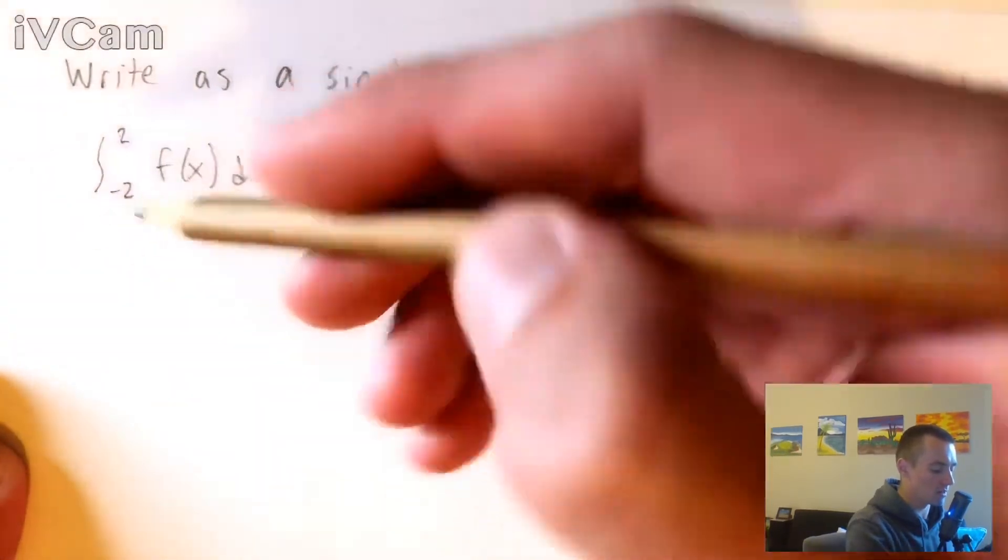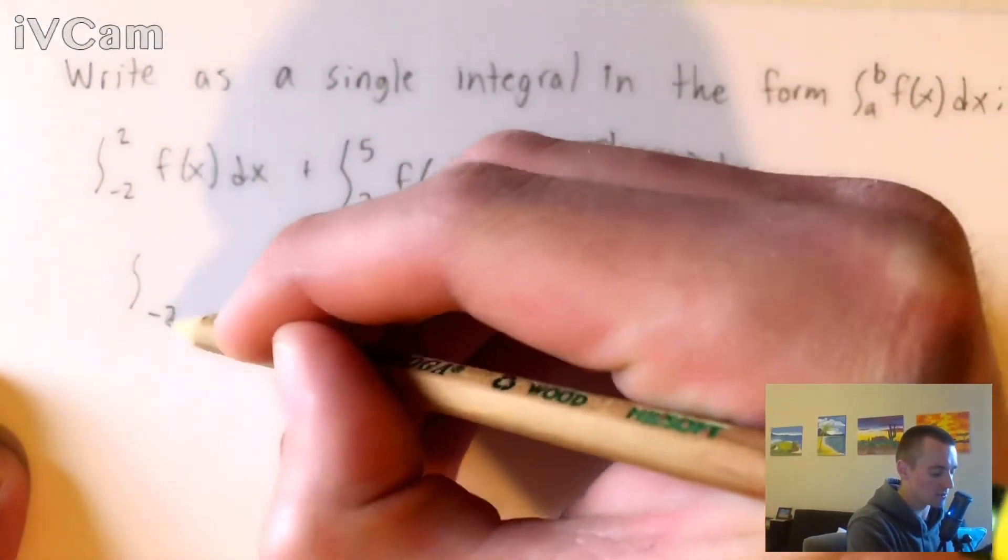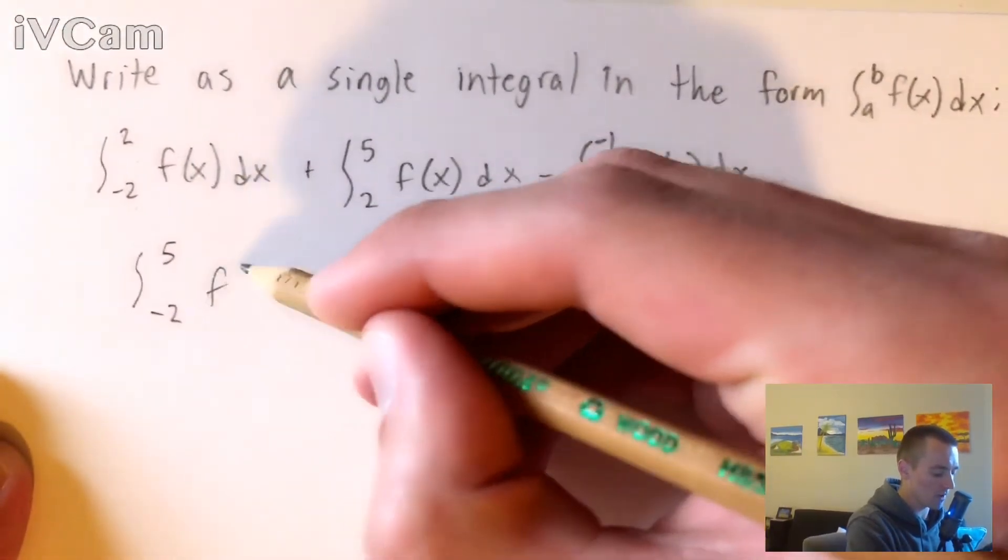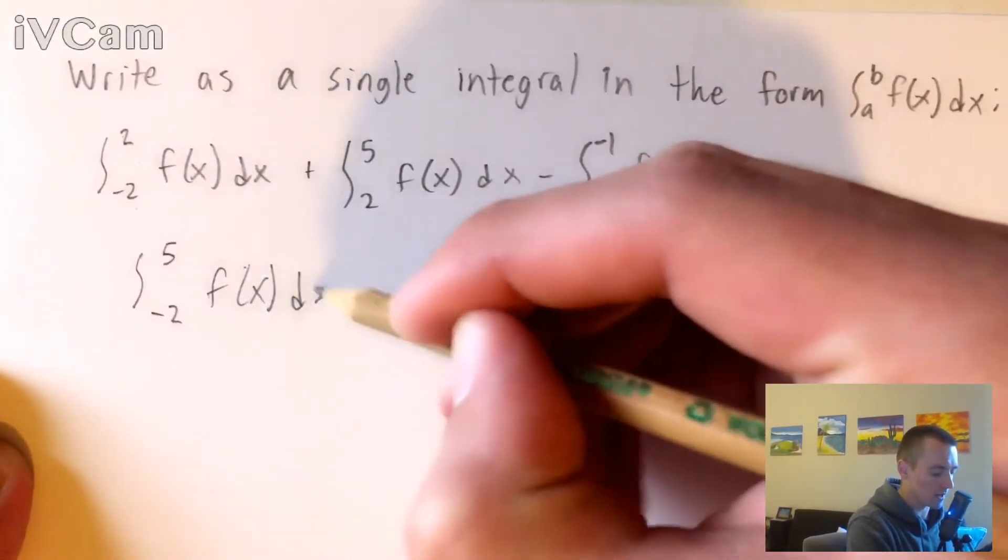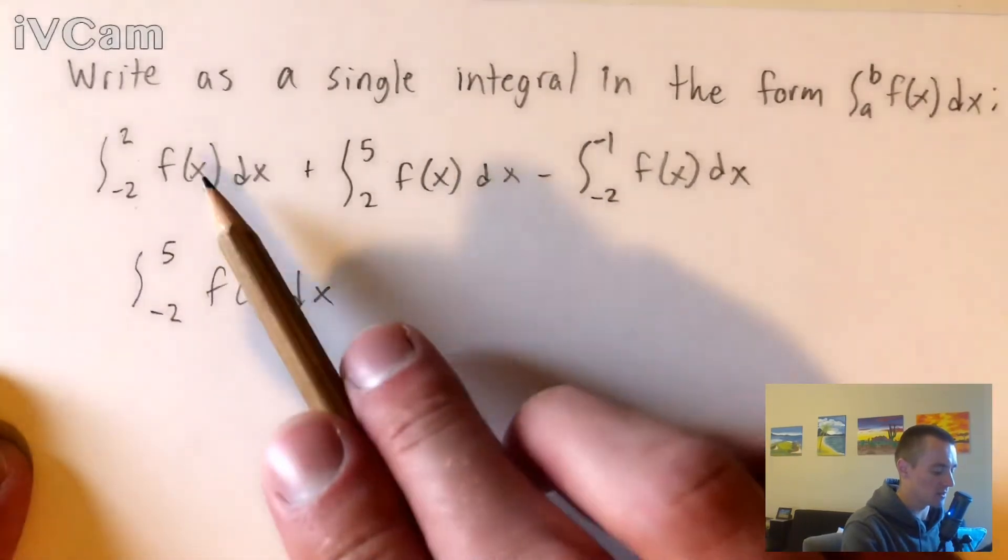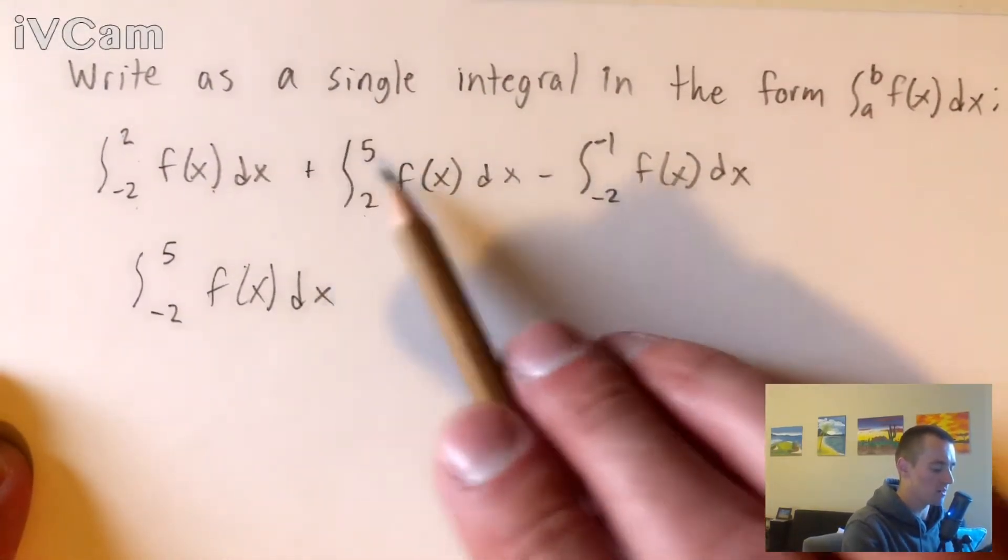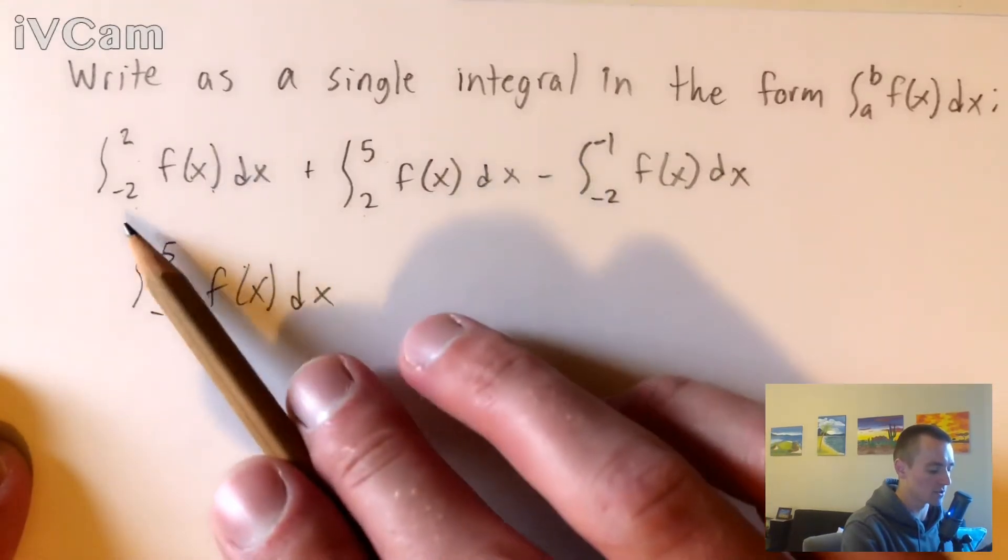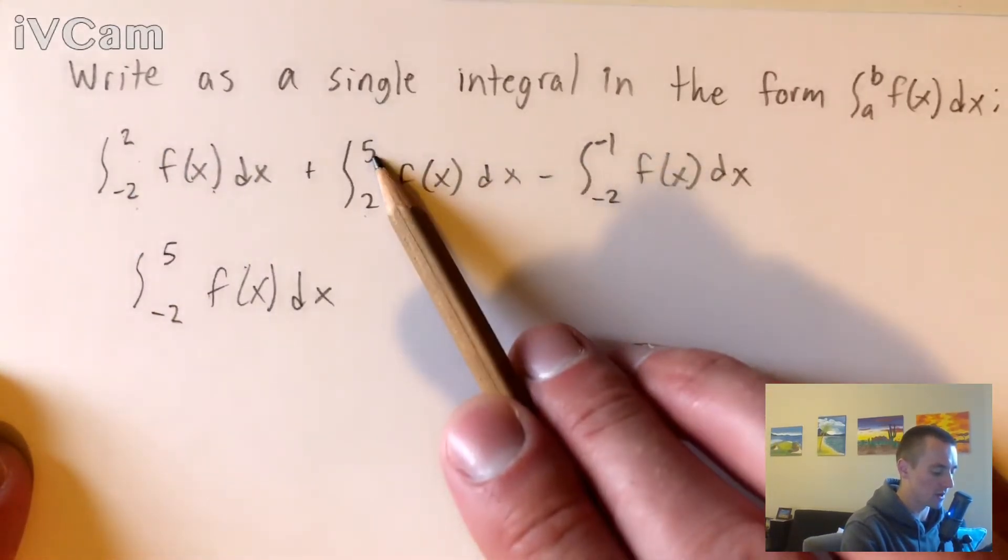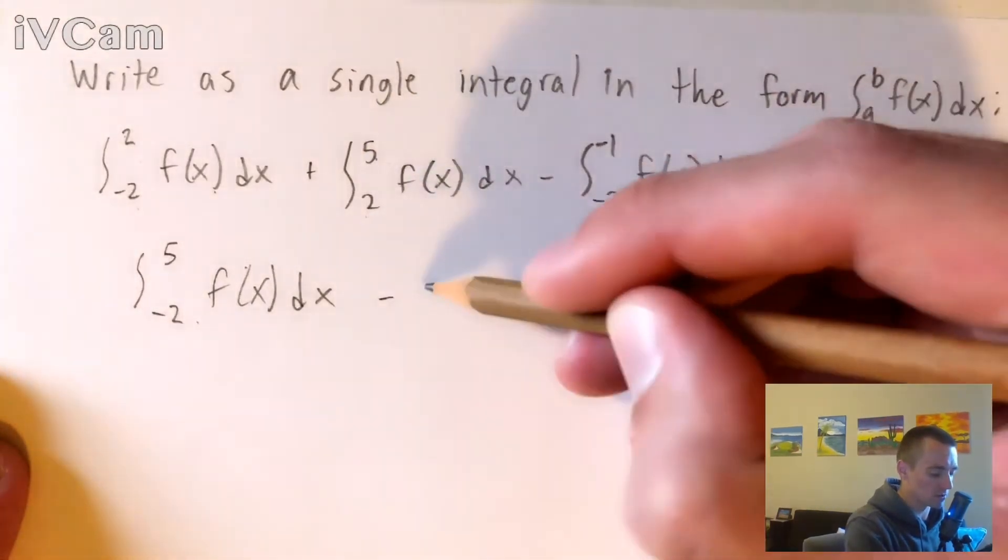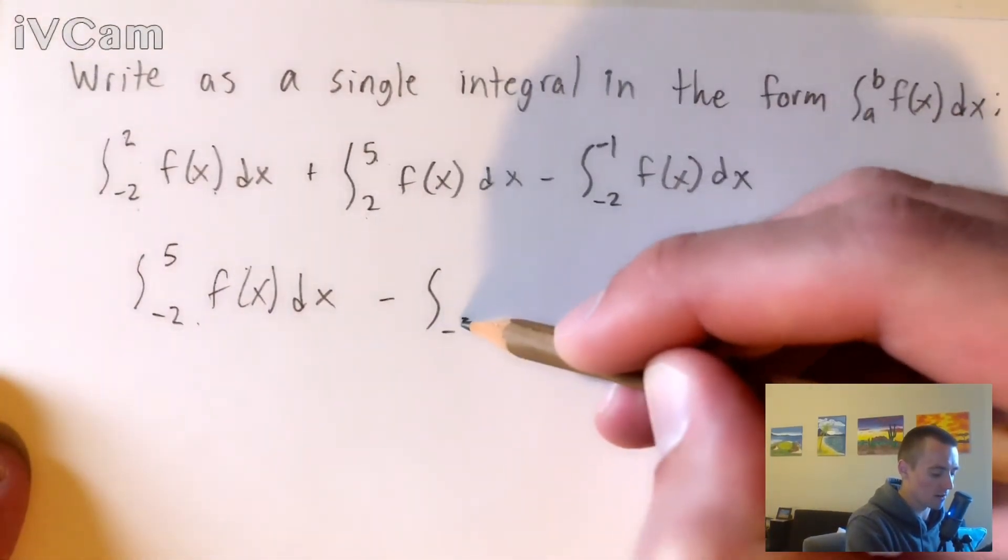So we can rewrite these as the integral from -2 to 5 of f(x)dx. That's because this integral goes from -2 to 2, this one goes from 2 to 5. The sum of those two is just going to go all the way from -2 to positive 5, which is exactly what we have here. We still don't want to forget about this other integral we have over here.